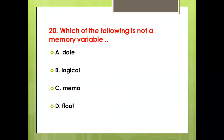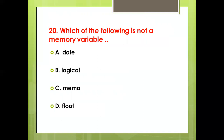Twentieth bit: Which of the following is not a memory variable? Option A: Date. Option B: Logical. Option C: Memo. Option D: Float. Answer: Option C, Memo.